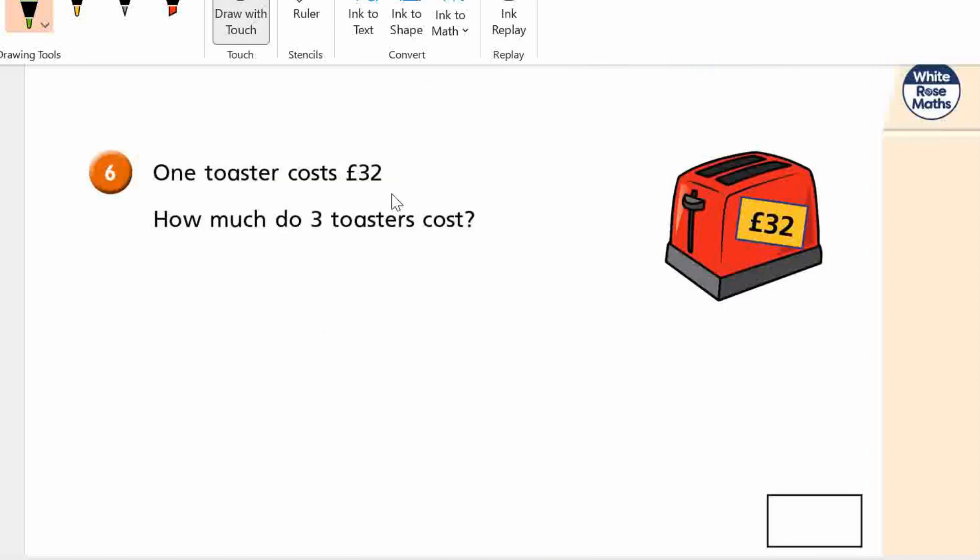So one toaster costs 32 pounds. How much do three toasters cost? So if we work it out like an equation, we do 32 times 3. You see I've got the larger number at the top and the smaller number at the bottom. And I do that. So what's 3 times 2? 6. 3 times 3. 9. Good. Okay. That's basically the answer. 96. 96 pounds.